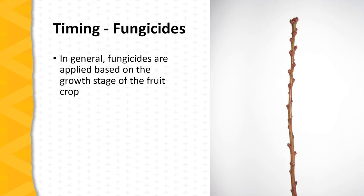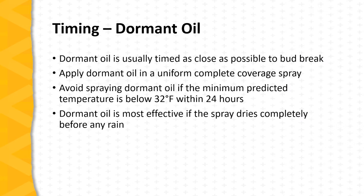Secondly, there are periods of time where the target pests — either an arthropod pest or a disease — are most susceptible to control. In the case of fungicides, we typically apply dormant sprays based upon the growth stage of the fruit crop. Looking at this picture of a dormant blueberry shoot, this would be an excellent stage at which to apply a lime sulfur or sulfur spray because there's no green tissue present that would be damaged by the potential phytotoxic effect of that spray. In the case of dormant oil, timing is again based upon growth stage, but dormant oil is typically applied as close as possible before buds actually begin to break and grow in the spring, because dormant oil acts as a spray that smothers pests and these pests tend to be most susceptible just before bud break.